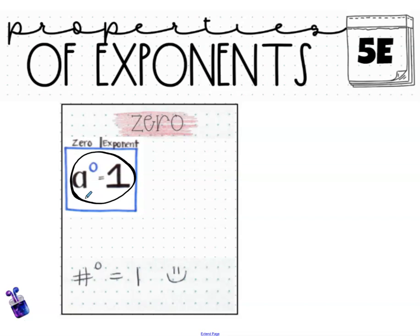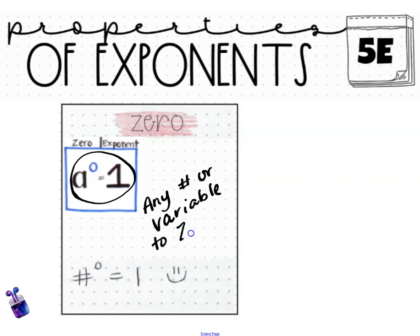So that is essentially the rule or the property that is happening here: any number or variable raised to the zero power equals one. Simple — if you see an exponent of zero, the answer is one.